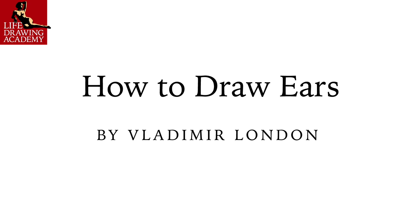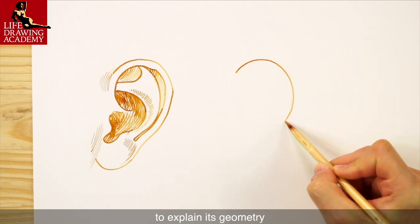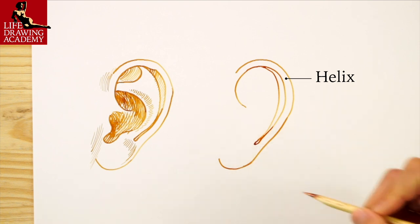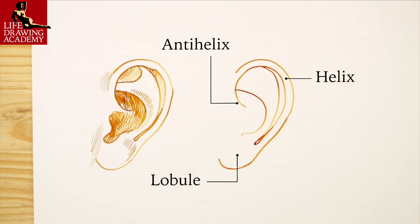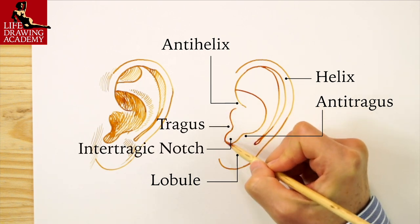How to Draw Ears by Vladimir London. I will make another quick sketch of an ear to explain its geometry. Here we go. The helix, the lobule, the anti-helix, and the anti-tragus and the tragus separated by the notch.